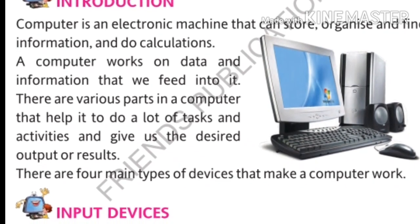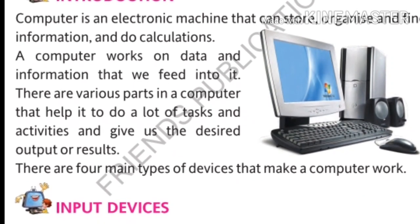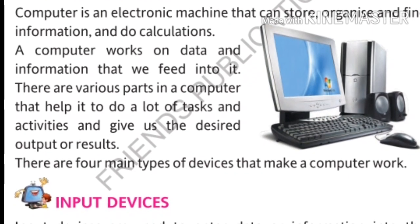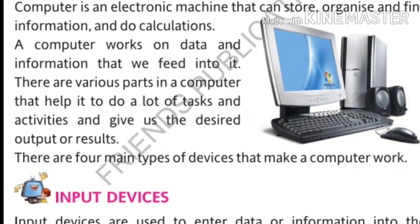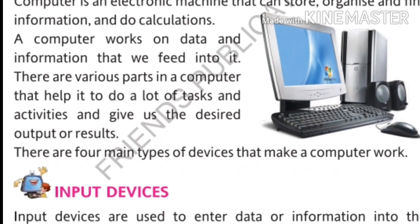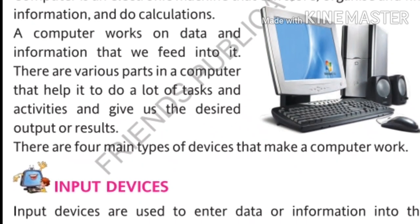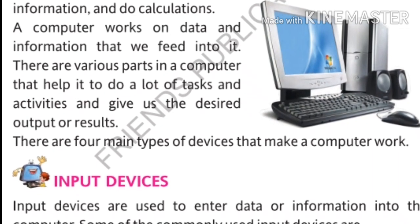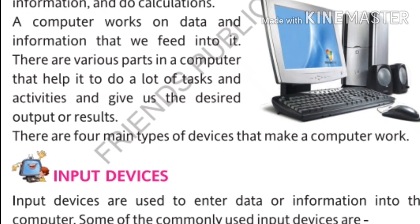Now there are various parts in a computer that help it do a lot of tasks and activities and give us the desired output or result. Like other machines, a computer also has different parts which make the work easy and fast. There are mainly 4 types of devices that make a computer work.